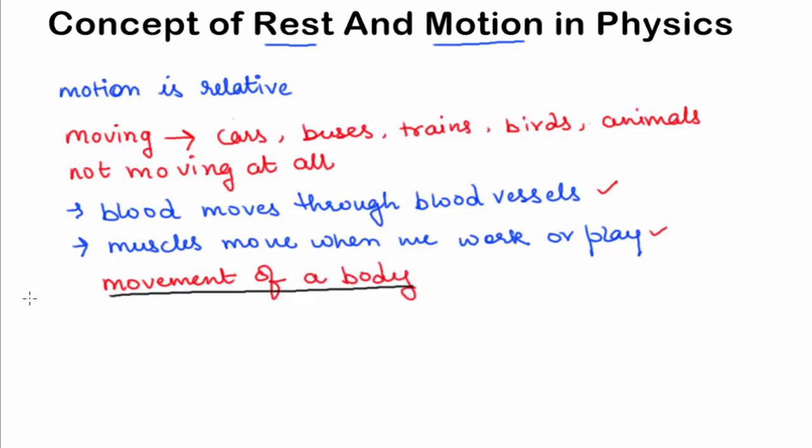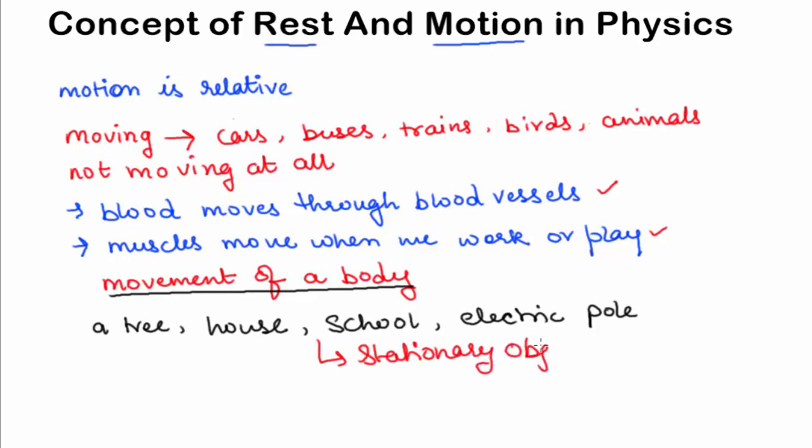Now let's talk about some objects like a tree, house, school, electric pole, etc. These objects are stationary objects.